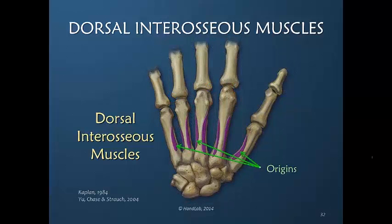The origins of the dorsal interosseous muscles, slightly dorsal, are long and although not very wide, they cover a significant surface area of the metacarpal. When I think about muscles with a very broad origin, that broad origin is really what allows that muscle to generate a significant amount of force, because it has a very stable base from which to pull.